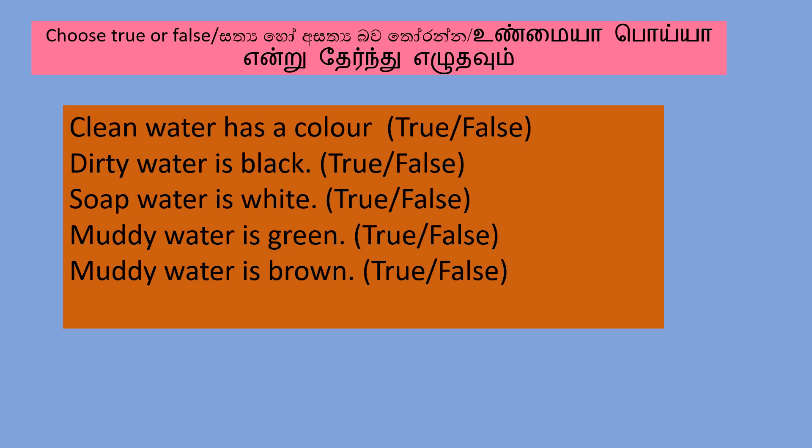Dirty water is black. Soap water is white. Muddy water is green. Muddy water is brown.